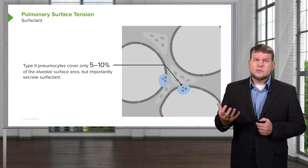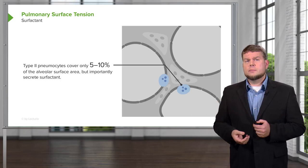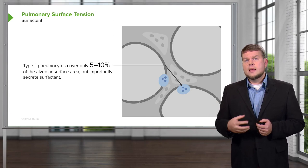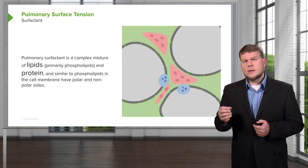Luckily we have two types of pneumocytes. The second type, type 2 pneumocyte, is in lower prevalence—only 5 to 10 percent of the alveolar space is covered by type 2 pneumocytes. They produce a substance called surfactant.